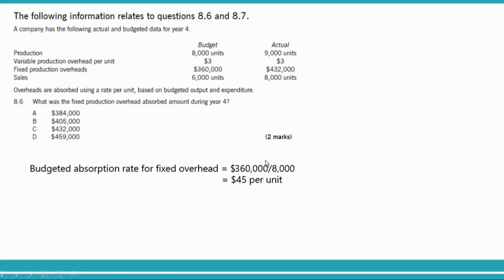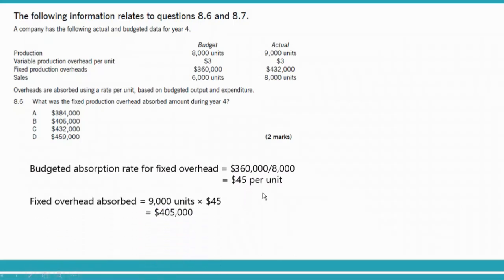The OAR is $45 per unit. Actual activity (actual production) is 9,000 units. So absorbed overhead equals 9,000 units multiplied by $45, which equals $405,000. This is your fixed overhead absorbed — OAR multiplied by actual activity.